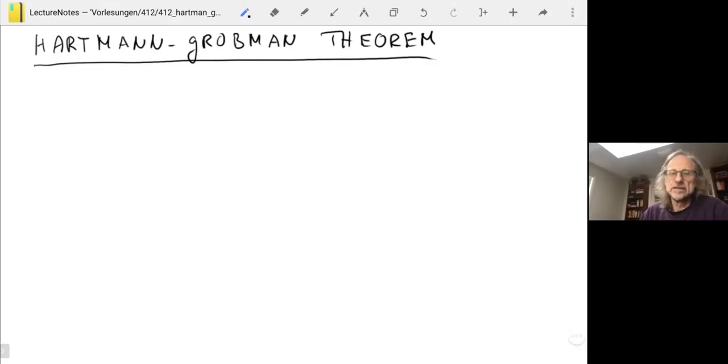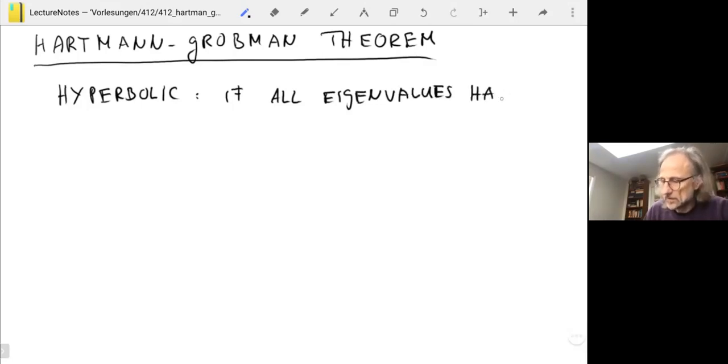Hartman-Grobman showed exactly conditions under which this linearization is really giving you the correct qualitative picture about the nonlinear system in the vicinity of a fixed point. Okay, so the idea is that essentially all the directions from or to the direction of the fixed point must have either inflowing or outflowing dynamics. So technically, someone needs to define what a hyperbolic fixed point is. So a fixed point is hyperbolic if all eigenvalues of its linearization have non-zero real part.